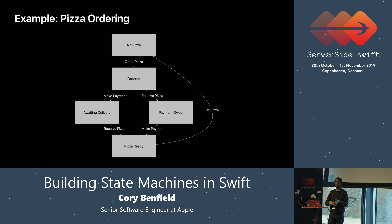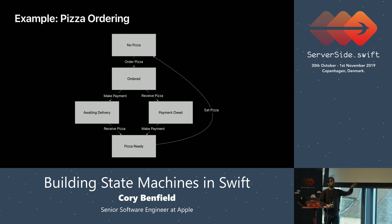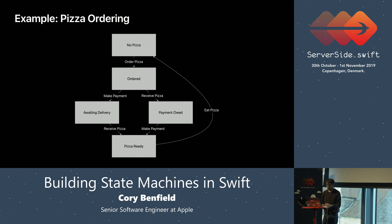This little complication — that I can do these things in more than one order — already begins to highlight one of the great strengths of a finite state machine: there is a very natural way to model this. The two inputs, make payment and receive pizza, transition us into different states, where those states encode the history of what had happened — whether we have already made a payment or received a pizza. This eliminates the possibility of making certain mistakes. For example, it is not possible to make more than one payment for the same pizza: make payment is not a valid input in the awaiting delivery state.